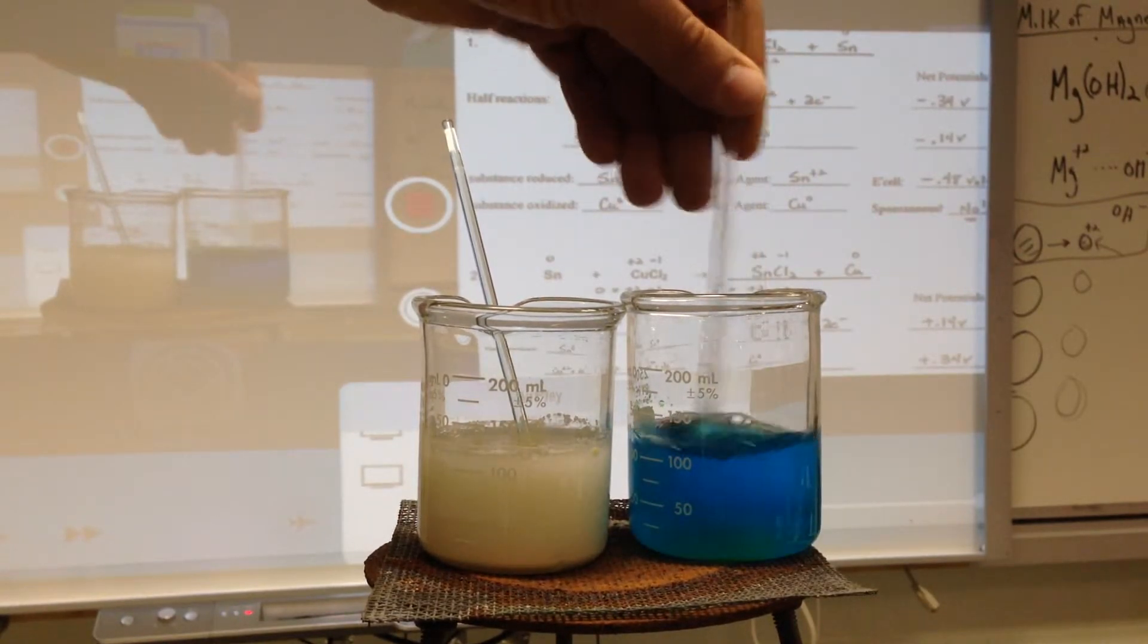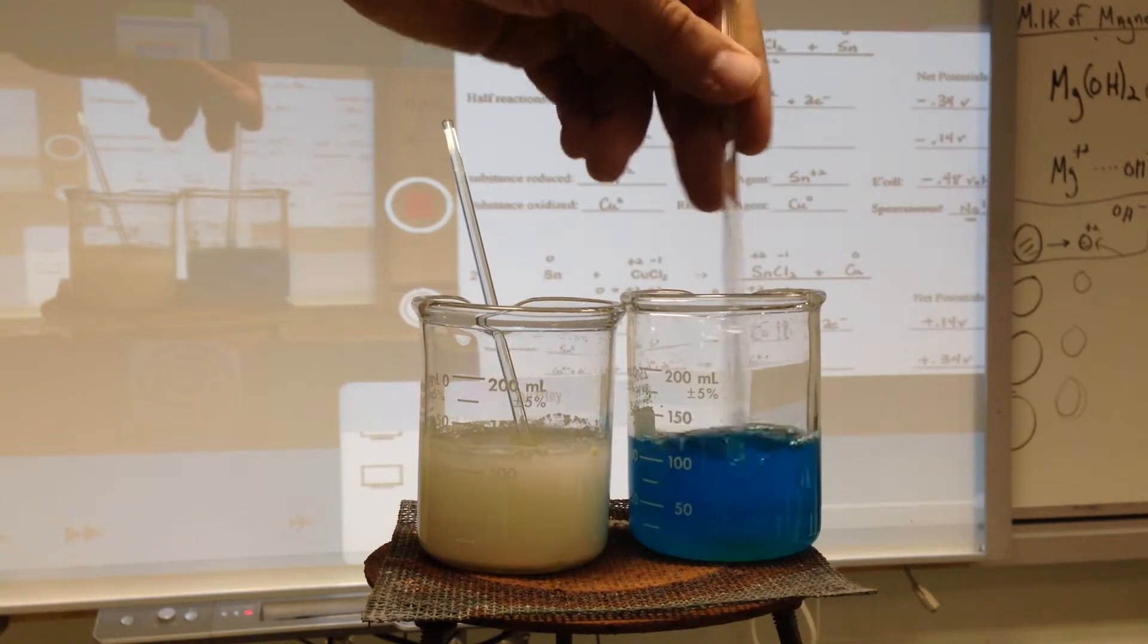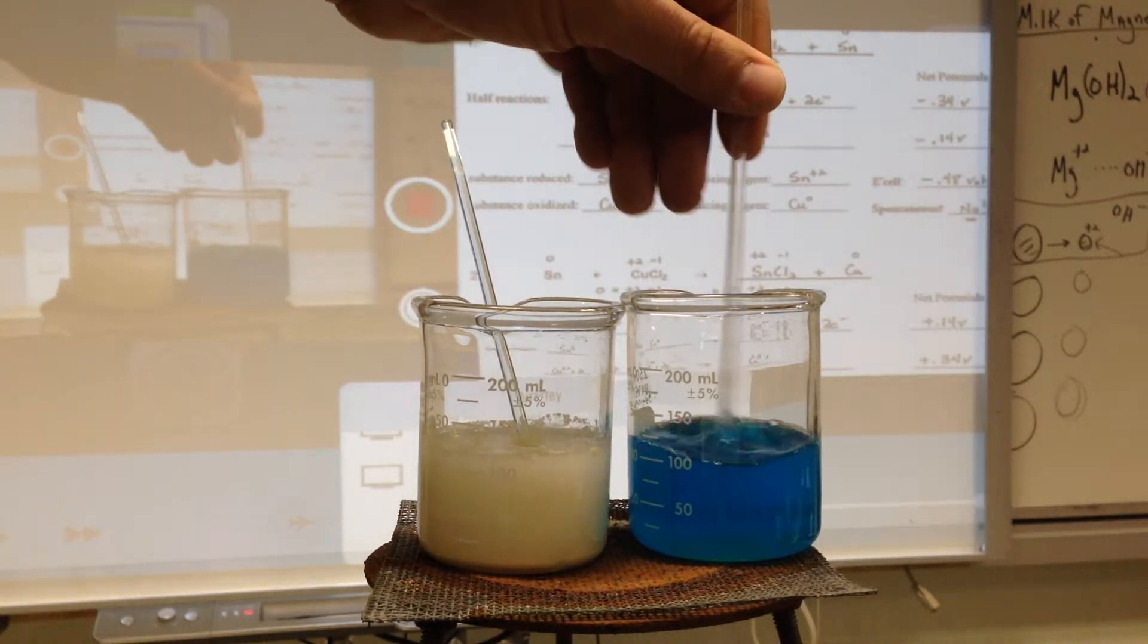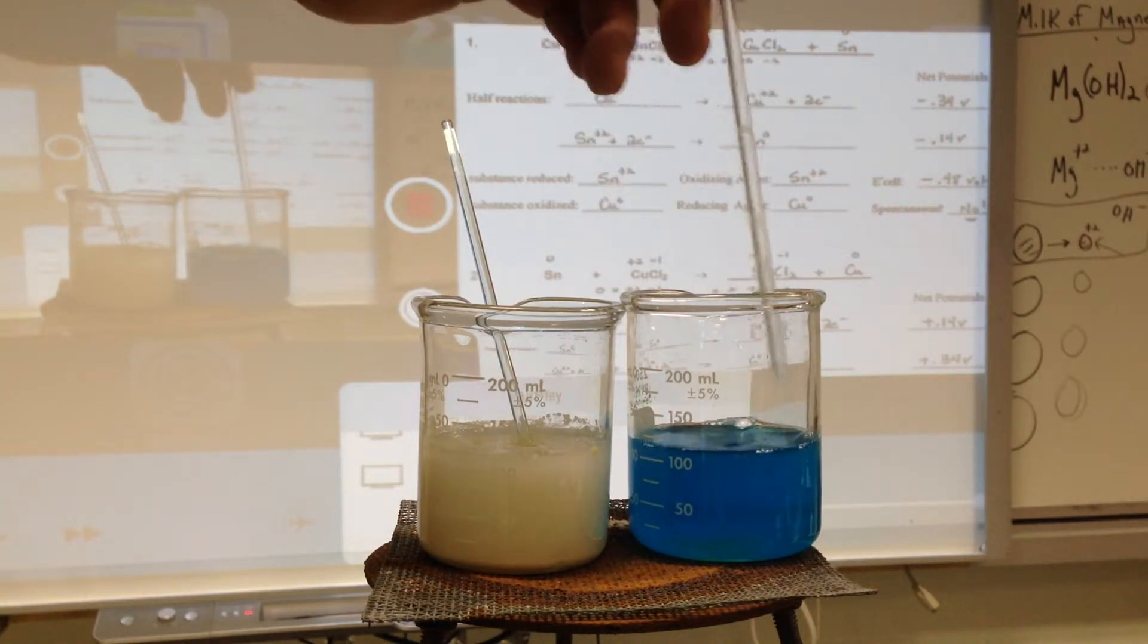The color of the solution is due to the crystal field theory that we'll talk more about. Transition metals with unfilled d orbitals absorb certain wavelengths of light.